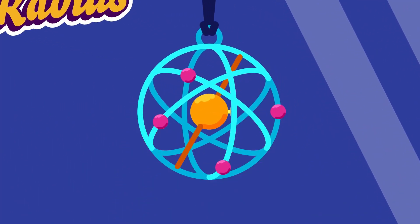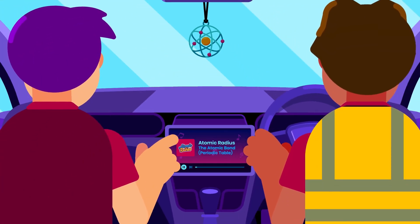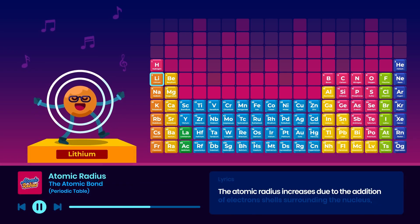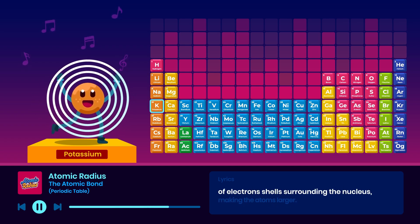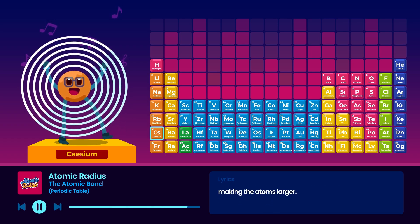Atomic radius is the distance from the nucleus of an atom to the outermost electron orbital. As we move down a group, the atomic radius increases due to the addition of electron shells surrounding the nucleus, making the atoms larger.